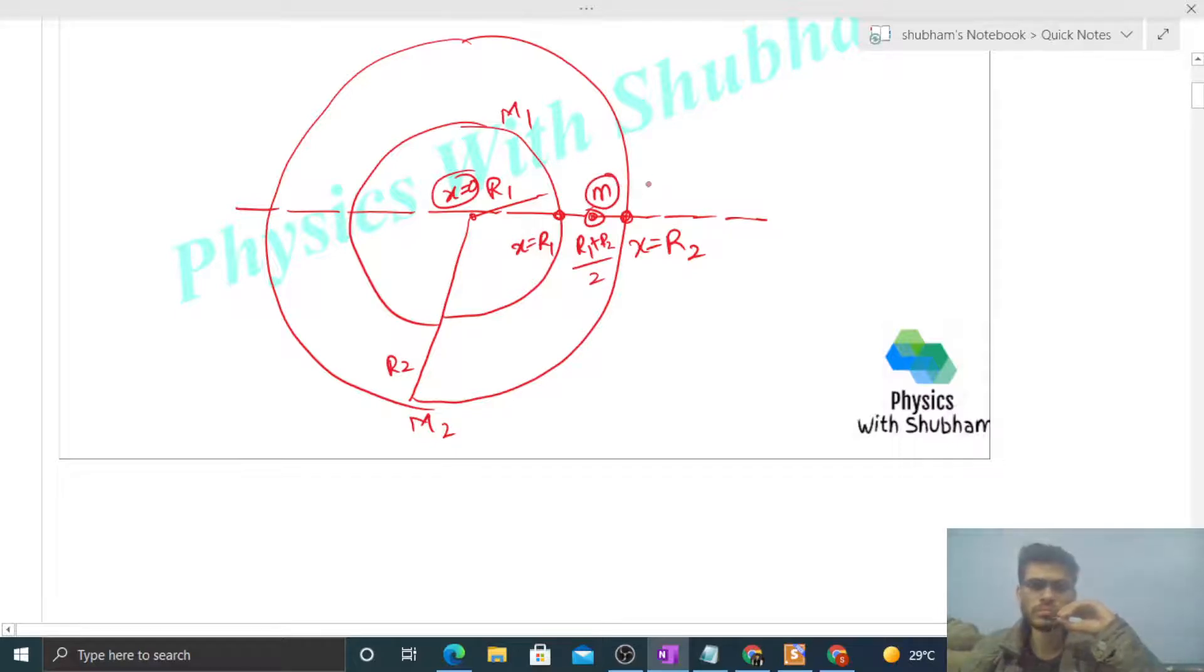So we have two shells, so let's use the principle of superposition. Let's say the force exerted by the inner shell on this small m is F1, and the force exerted by the outer shell on this small m is F2. So their vector sum will be the net force on this small m.